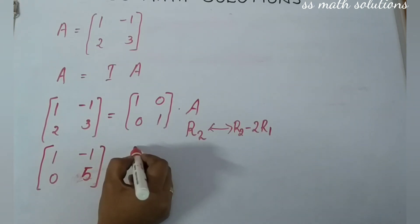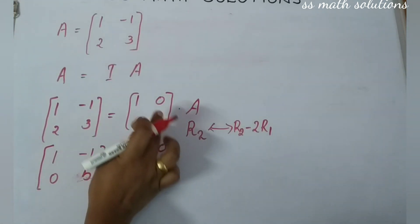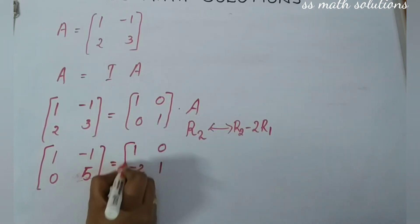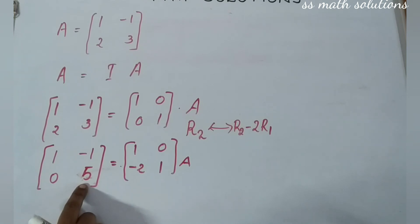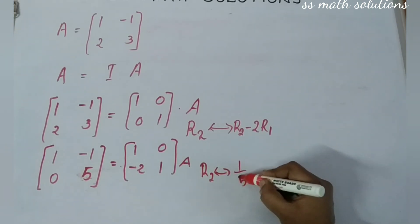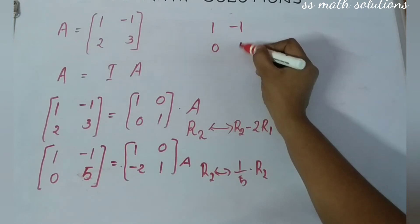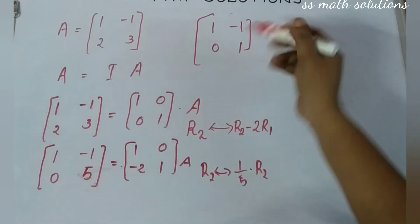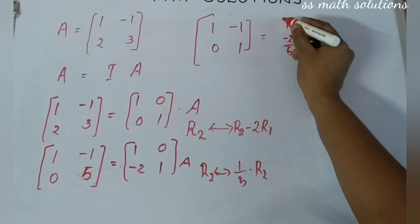Now we need a 1 in the second row second column position. We apply R2 → (1/5)R2, that is, dividing R2 by 5. The left side becomes [1,−1; 0,1]. On the right-hand side, R1 stays [1,0] and R2 becomes [−2/5, 1/5] into A.